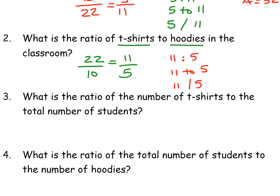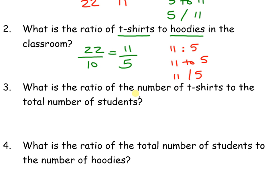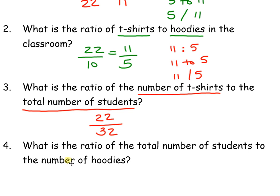Let's take a look at the third question: what is the ratio of the number of t-shirts to the total number of students? We had 22 students wearing t-shirts and 32 students total. We need to make sure to simplify this — 22 over 32 simplifies to 11 over 16. Write your ratio in three different ways: 11 colon 16, 11 to 16, and 11 slash 16.